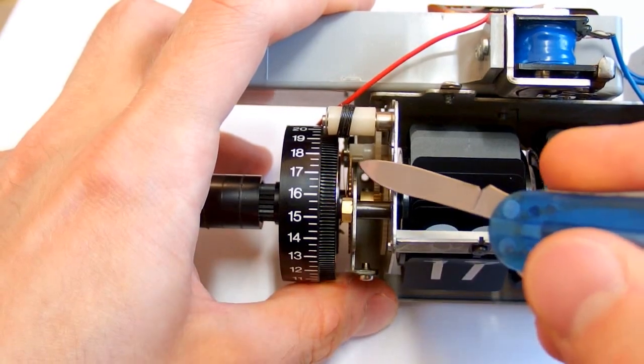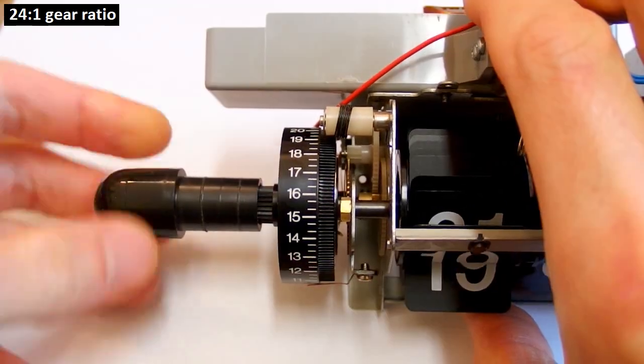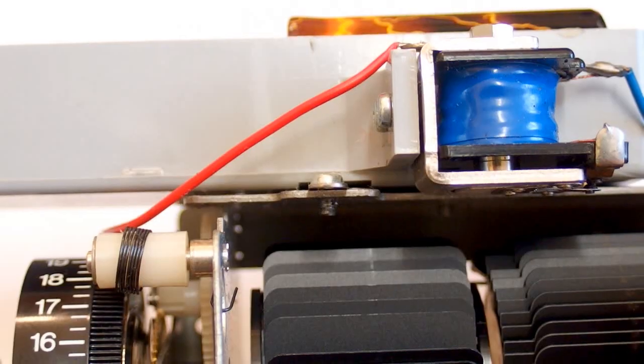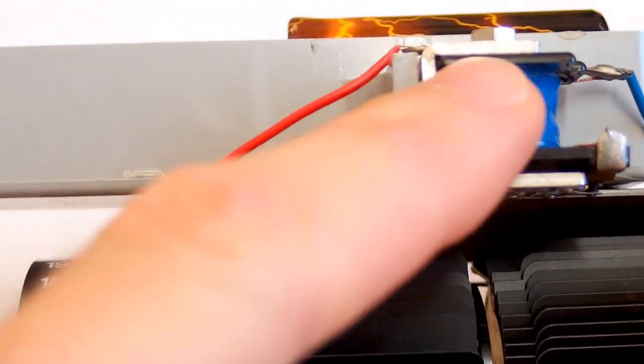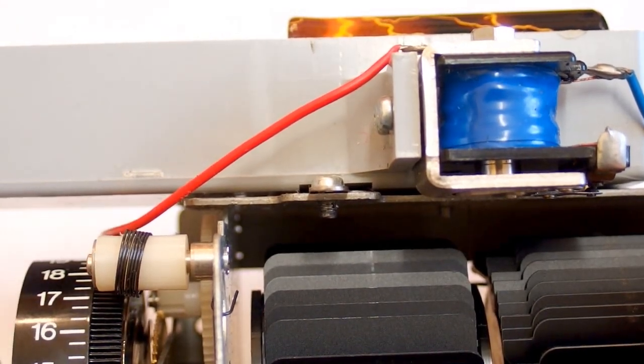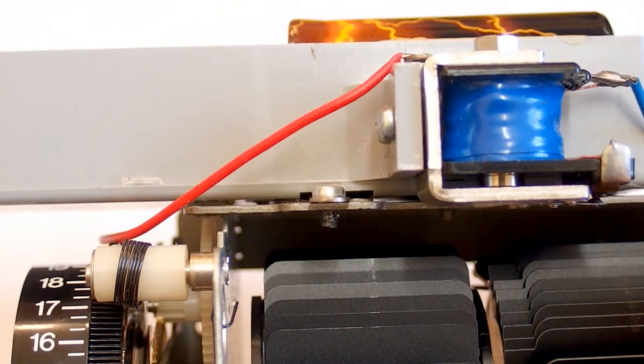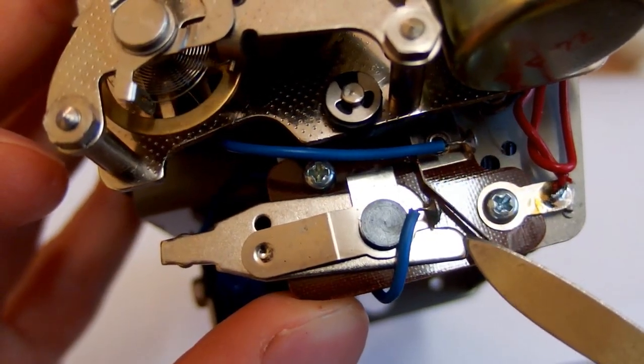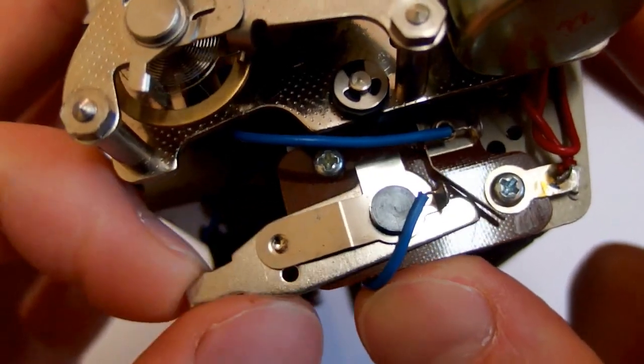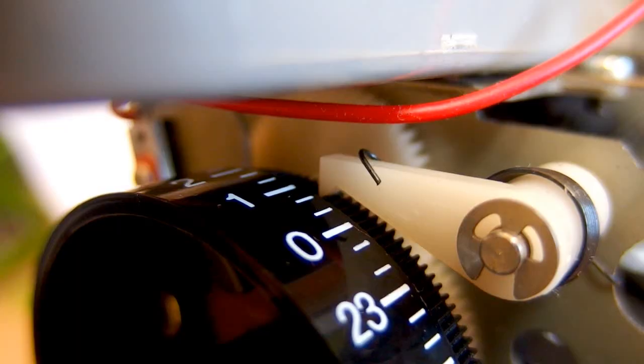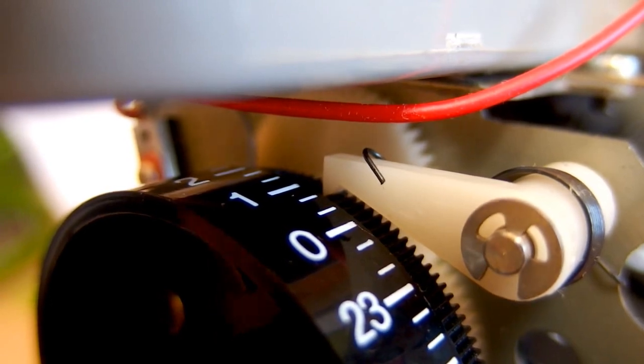Here you can see the gears of hours and minutes. The alarm is basically just an electromagnet with vibrating contacts here. Here is the alarm switch making contact here. Here is the one-way mechanism of the alarm wheel.